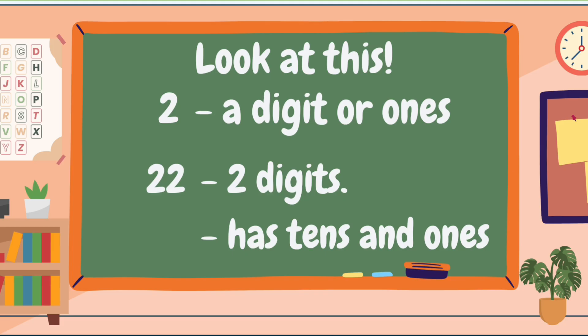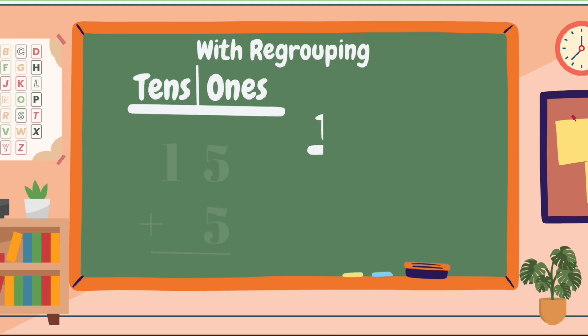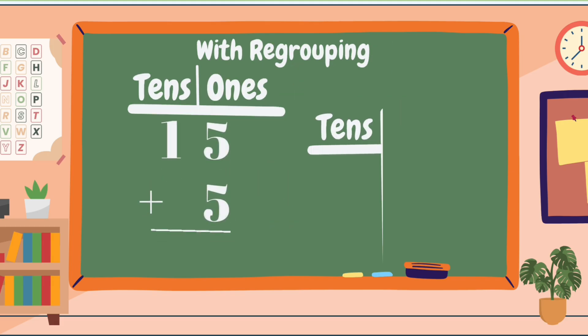Now, let us learn about adding two digits by one digit with regrouping. We have here an example: 15 plus 5. We are going to use the long method of addition. In this example, how many ones do we have? That is correct — we have two ones: the number 5 in the number 15, and the number 5 itself.